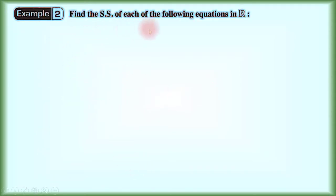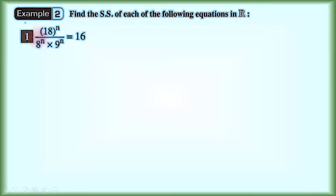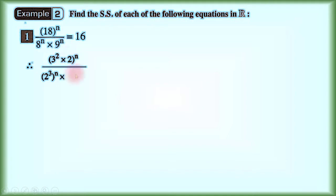Example number 2: find the solution set for each of the following equations in the real numbers. Number 1: 18 power n over (8 power n times 9 power n) equals 16. We note that 18 equals 9 times 2, so we can write 18 as 3 power 2 times 2, all raised to the power n. And 8 is 2 power 3, all raised to n; 9 is 3 power 2, all raised to n; and 16 is 2 power 4.